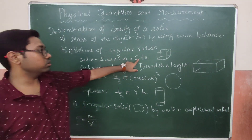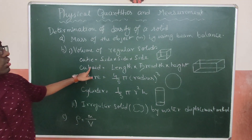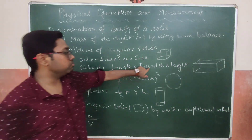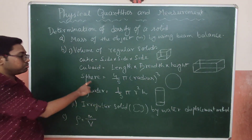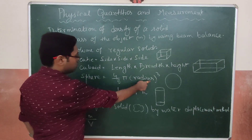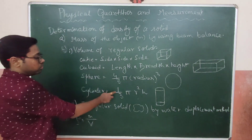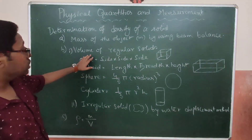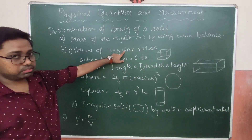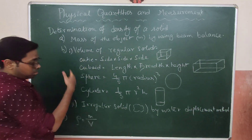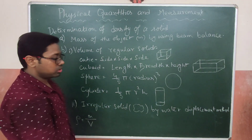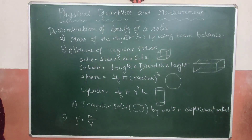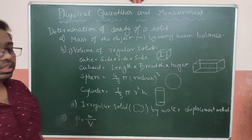The volume of a cube is side × side × side. For a cuboid, volume is length × breadth × height. The volume of a sphere is (4/3)πr³, and the volume of a cylinder is πr²h. These formulas are for solids with regular shapes. For irregular solids, we use the water displacement method, which we will understand in the next part.